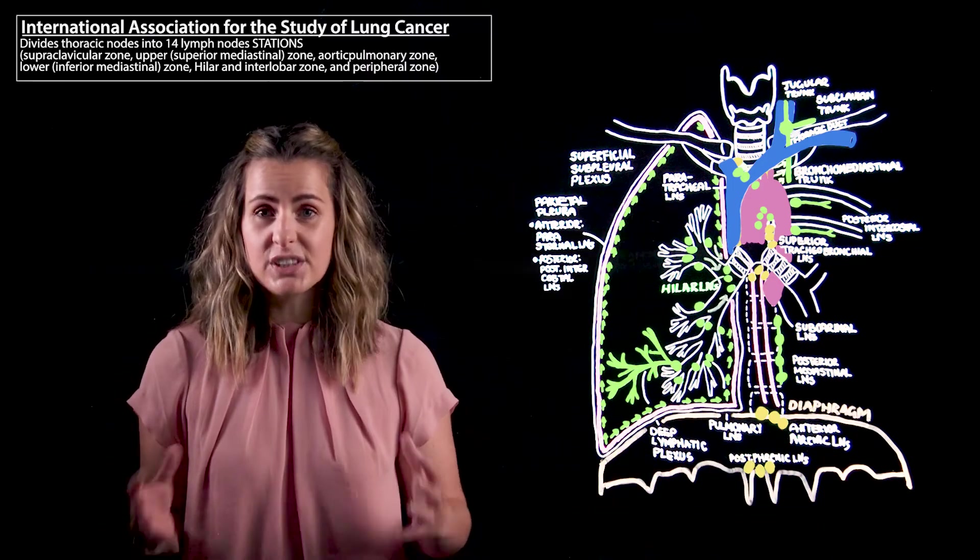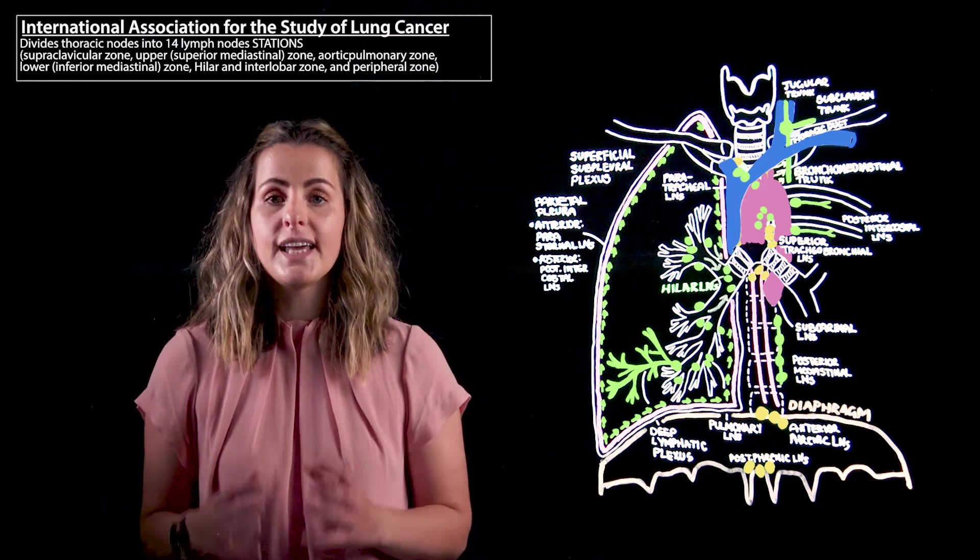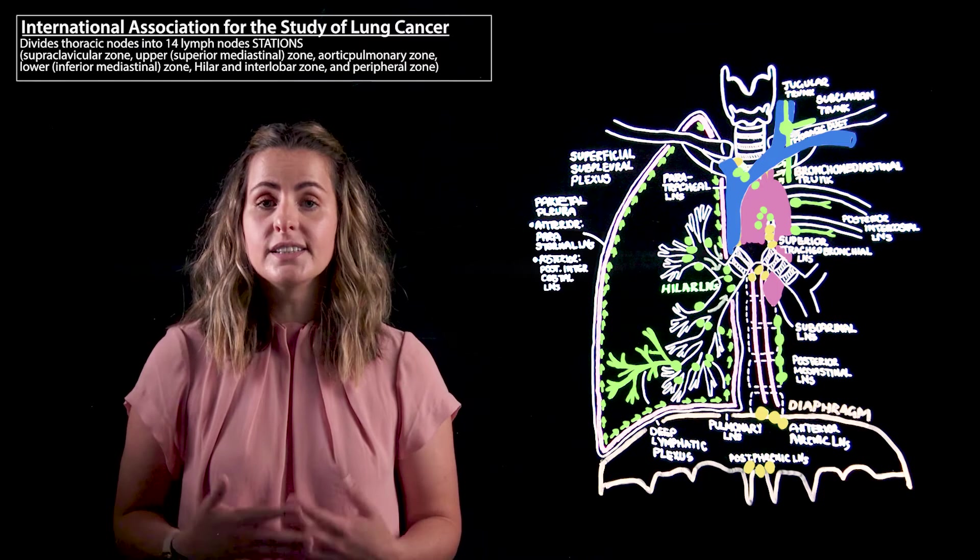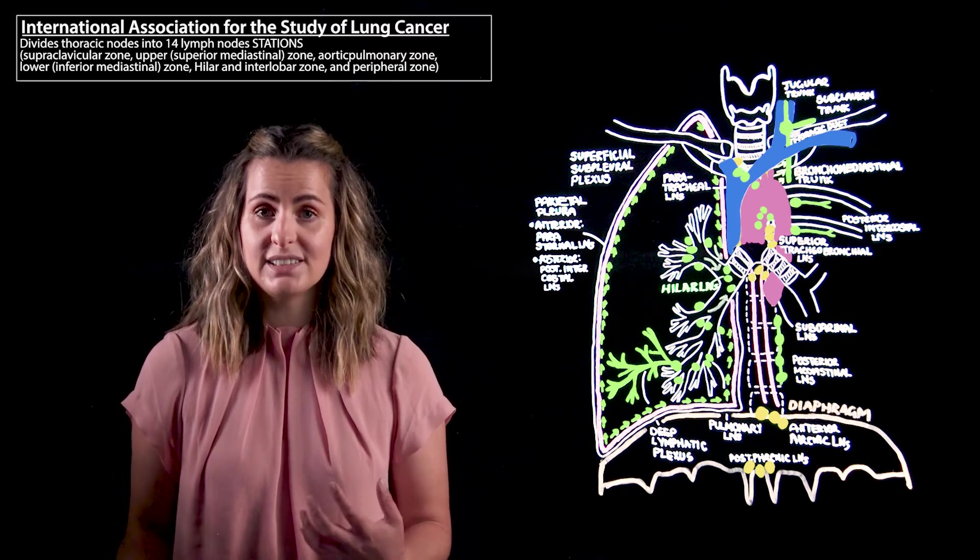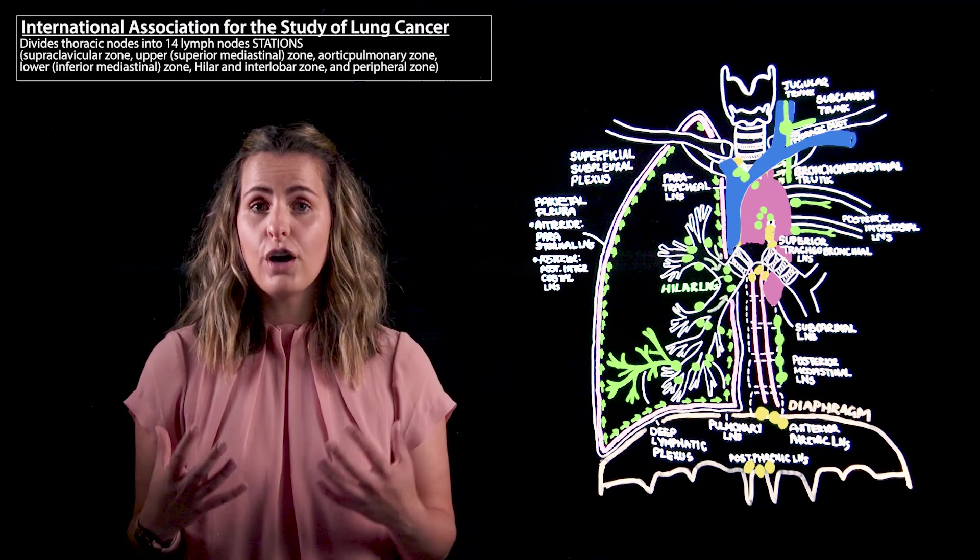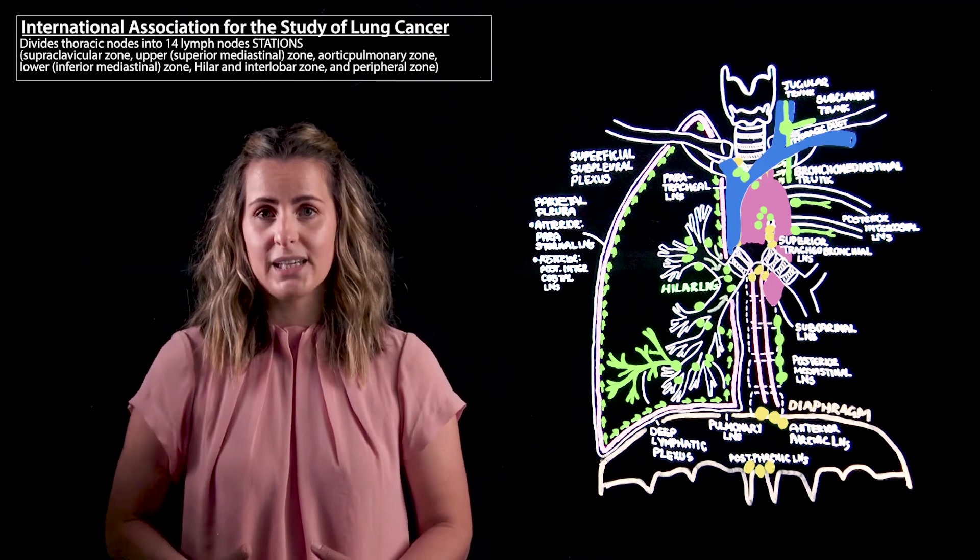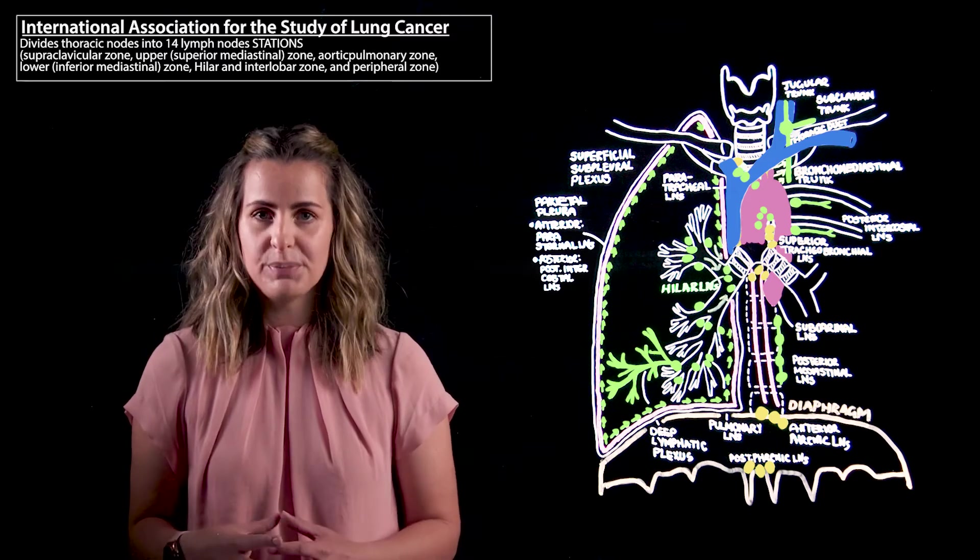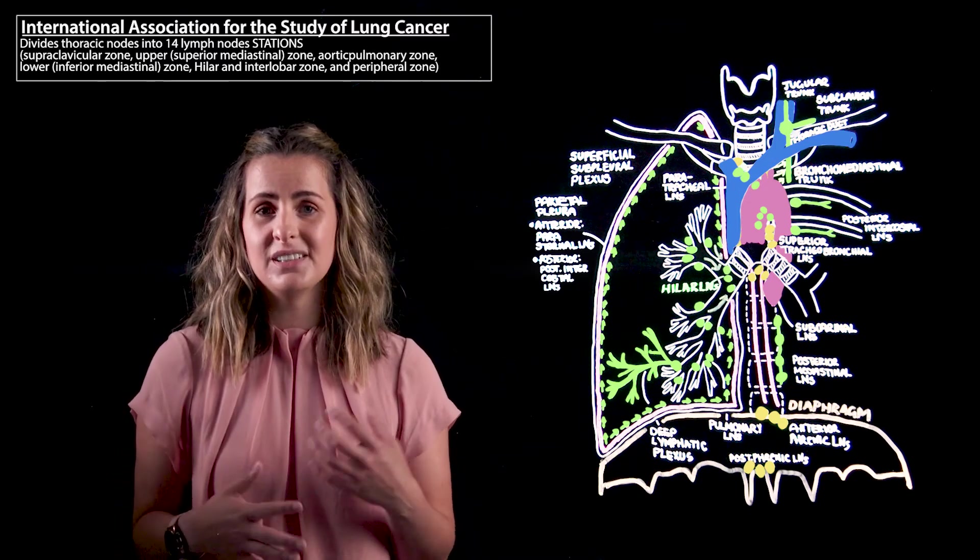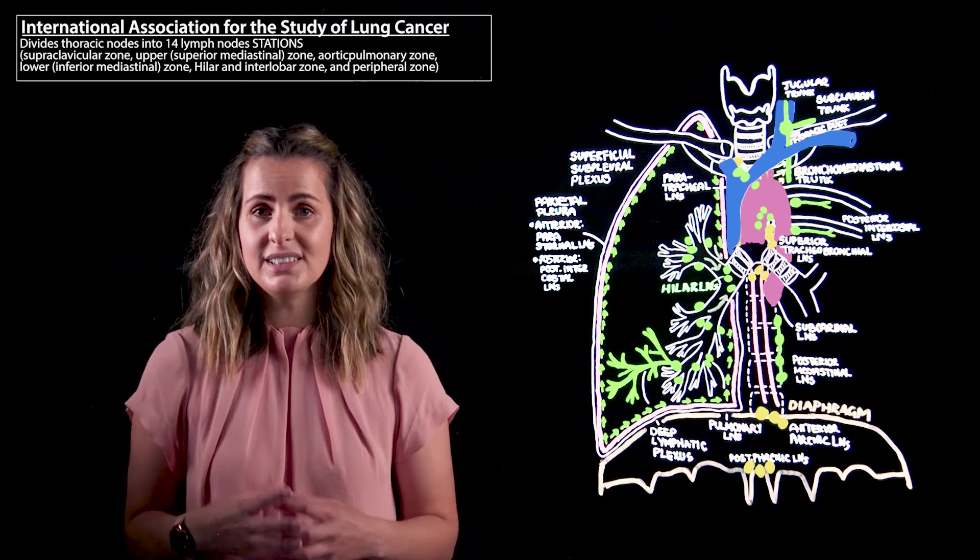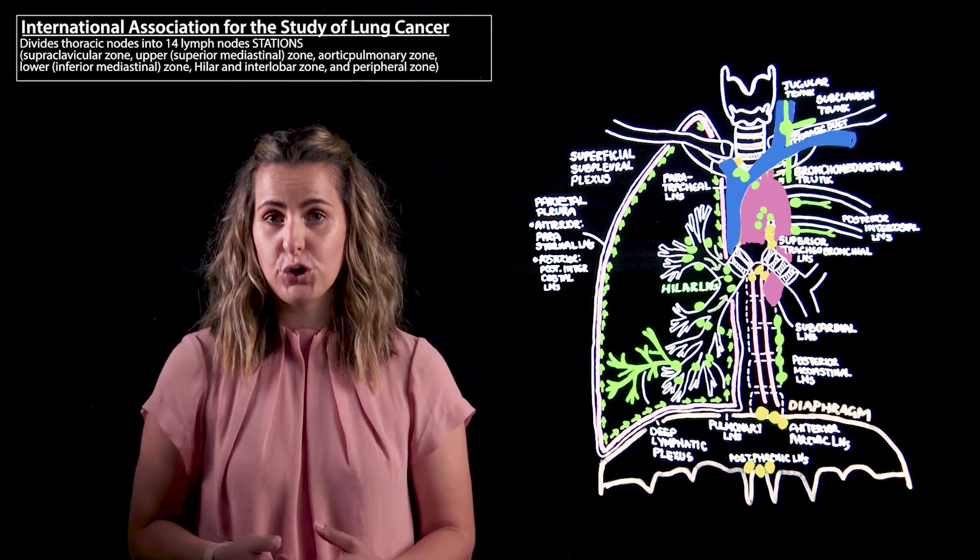As I mentioned at the start of this video, the International Association for the Study of Lung Cancer tends to divide the thoracic lymph nodes into 14 stations in the context of oncology staging as well as thoracic surgery planning. Therefore, it is not the purpose of this video to go into the specific stations but rather to use the defined landmarks to assist us with locating some of these nodes.